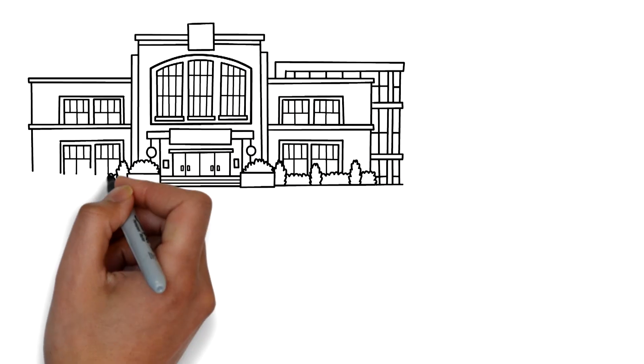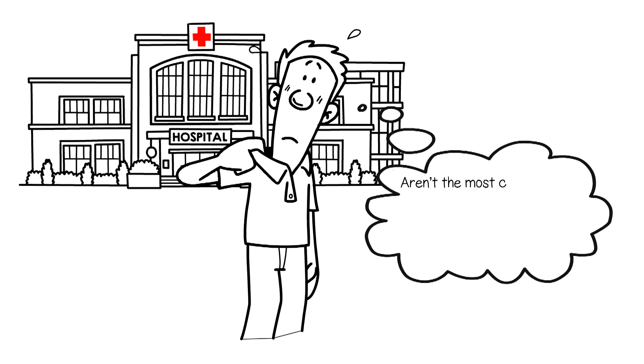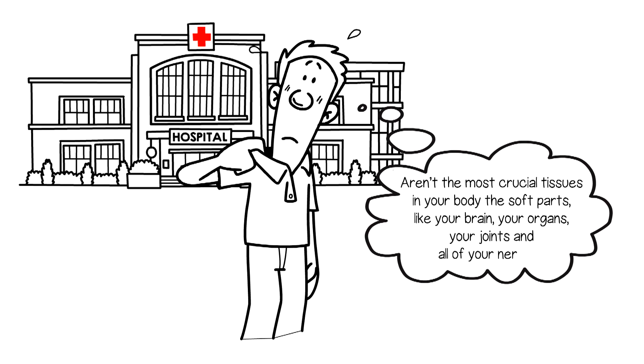On the way home from the emergency room, still in pain, John thought, aren't the most crucial tissues in your body the soft parts like your brain, your organs, your joints, and all of your nerves?